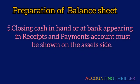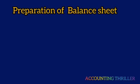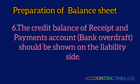Closing Cash in Hand or at Bank appearing in the Receipt and Payment Account must be shown on the Assets side. A credit balance in the Receipt and Payment Account, such as a Bank Overdraft, must be shown on the Liabilities side.